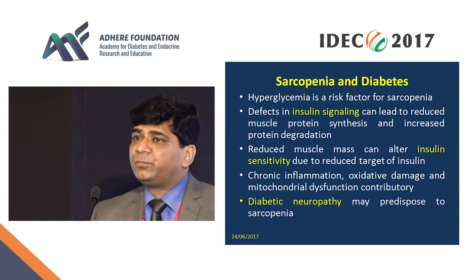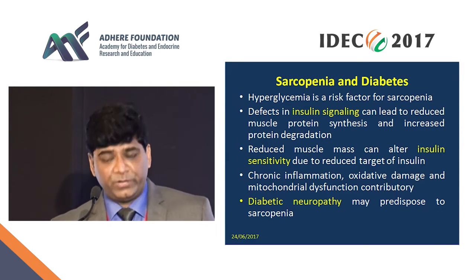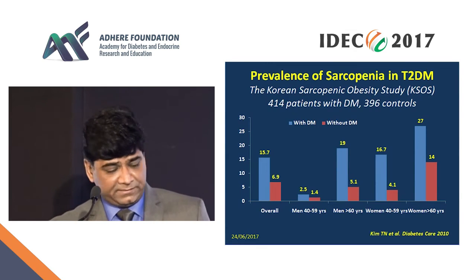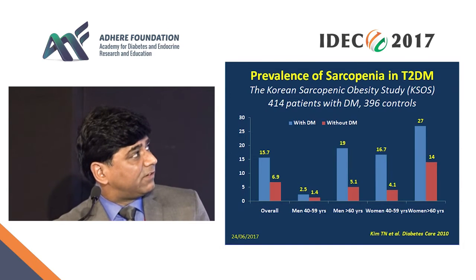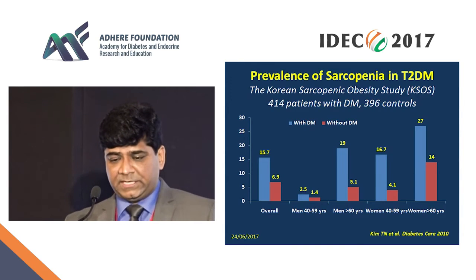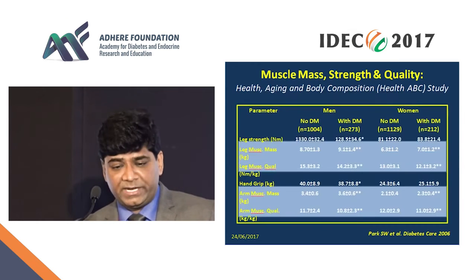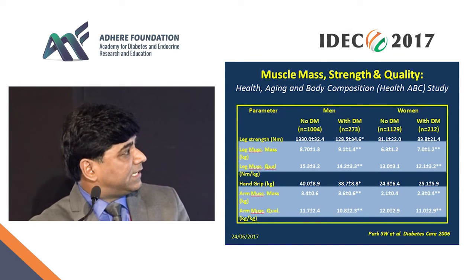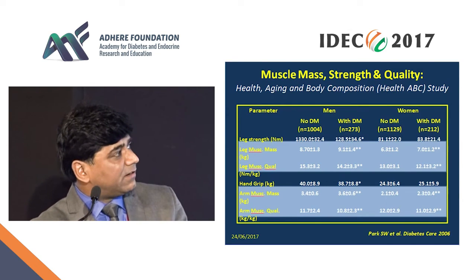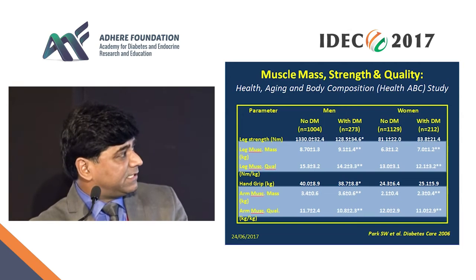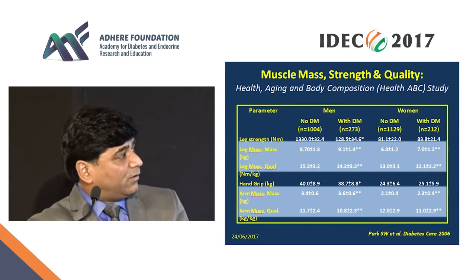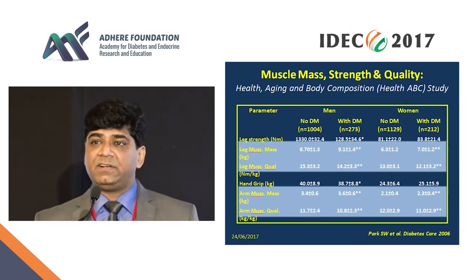Studies on the prevalence of sarcopenia in type 2 diabetes include the Korean Sarcopenic Obesity Study with around 400 patients with and without diabetes, showing that across all age groups, the prevalence of sarcopenia was higher in individuals with diabetes compared to those without. In another study — the Health, Aging and Body Composition study — muscle mass was similar or even higher in diabetic individuals compared to those without diabetes. However, muscle quality, indicated by muscle strength, was lower in diabetic individuals, both in men and women, in both leg and arm muscles.